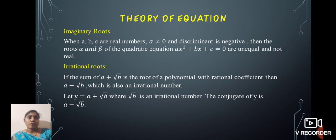Next, we define irrational roots. If the sum of A plus √B is the root of a polynomial with rational coefficient, then A minus √B is also an irrational number. Let y = A + √B where √B is an irrational number, then the conjugate of y is A - √B.